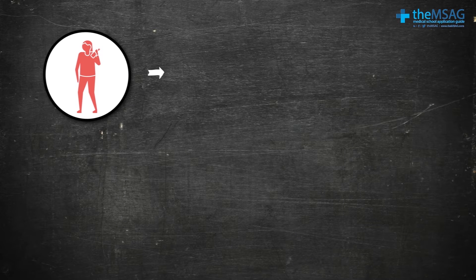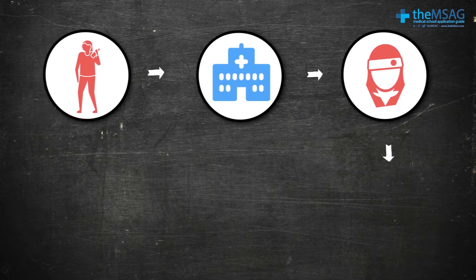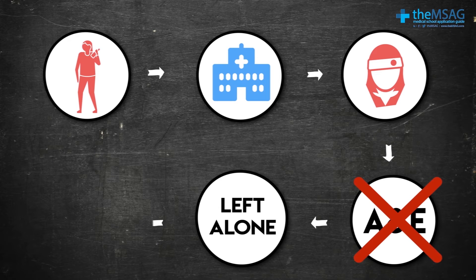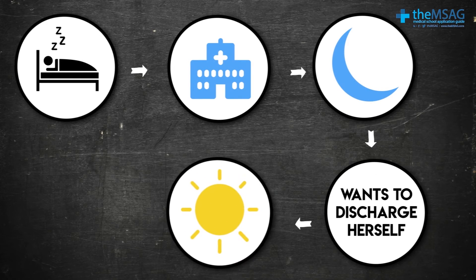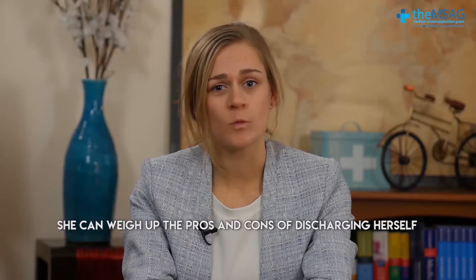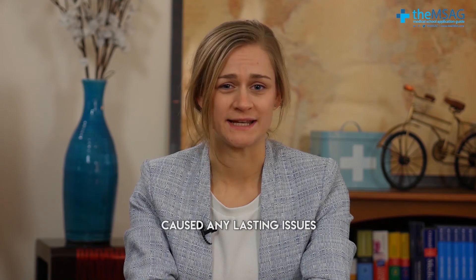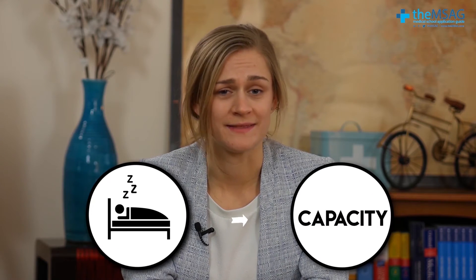The important thing to remember about capacity is that it's decision and time specific. For example, imagine one of your friends drinks too much alcohol and you have to take her to hospital because she's hit her head while falling over. She doesn't want to be examined in A&E. In this instance, she likely does not have capacity, because it's unlikely she can logically weigh up the pros and cons of the decision. Now consider your friend stays in hospital overnight and wants to discharge herself in the morning, even though some tests are still outstanding. By this point, the alcohol level in her blood has reduced, and she can weigh up the pros and cons of discharging herself, and her head injury doesn't seem to have caused lasting issues. At this point, she probably does have the capacity to make the decision to self-discharge. This demonstrates that just because she didn't have capacity the night before, doesn't mean she will continue to lack capacity throughout her admission.